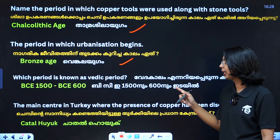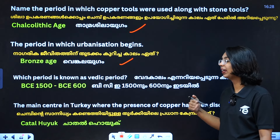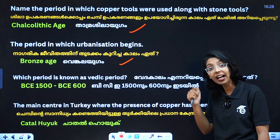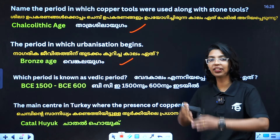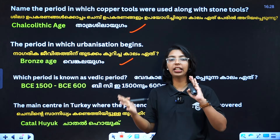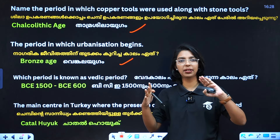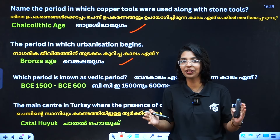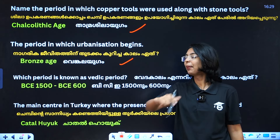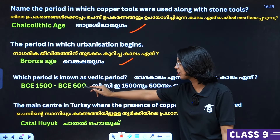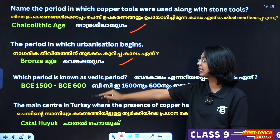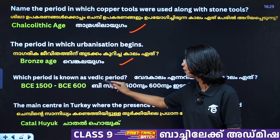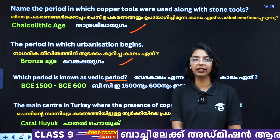Which period is known as the Vedic period? The Vedic period is the time period from BC 1500 to BC 600. If you study BC 1500 to BC 600, that is the Vedic period.